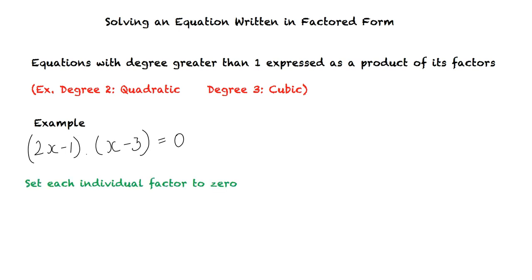The first step to solve the problem is to set each individual factor present in the factored form to 0. Here, 2x-1 is a factor, and x-3 is a factor. Thus, we set each of the factors to 0.